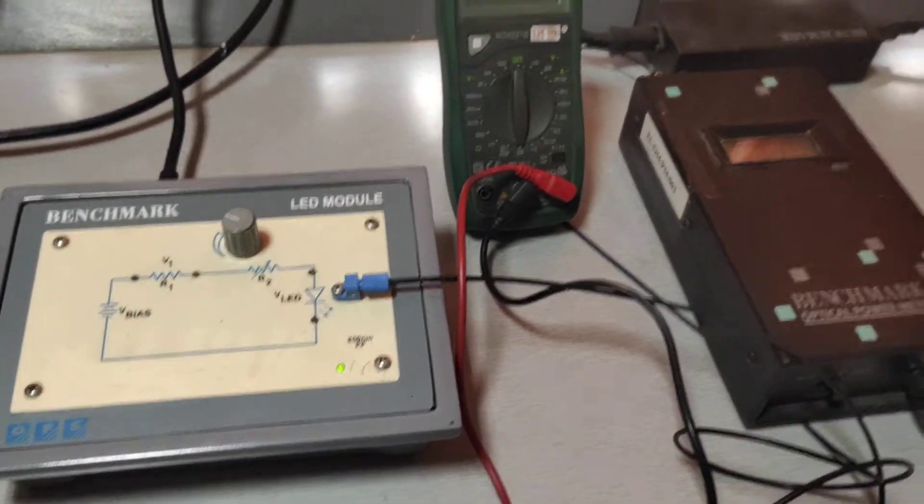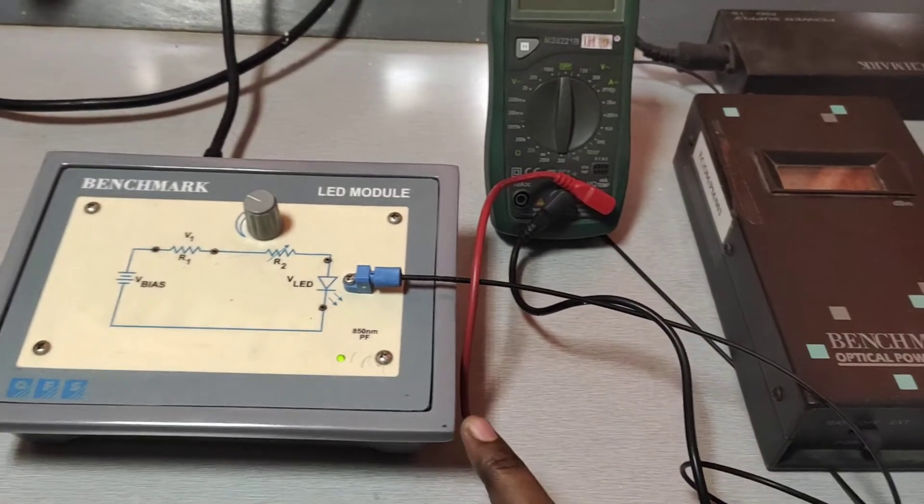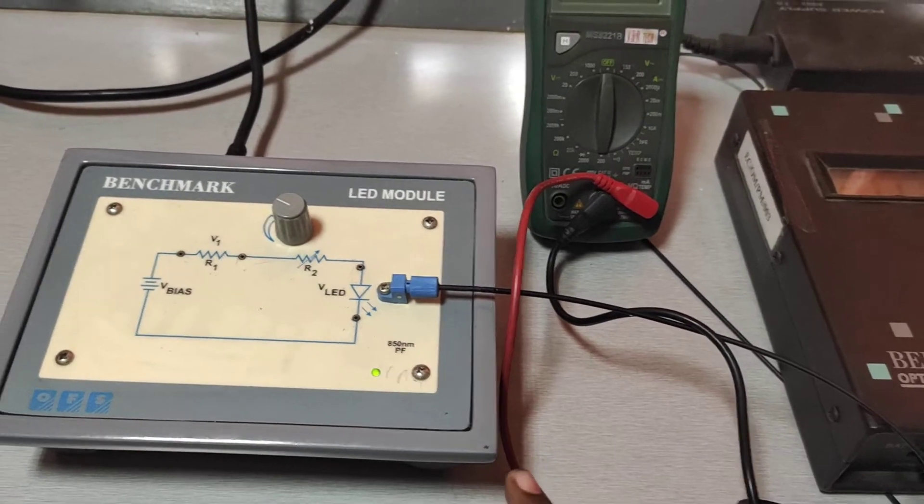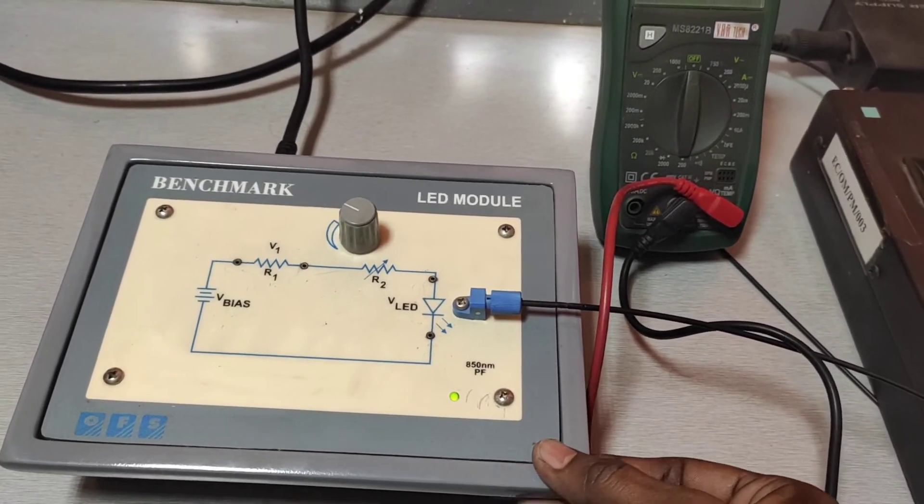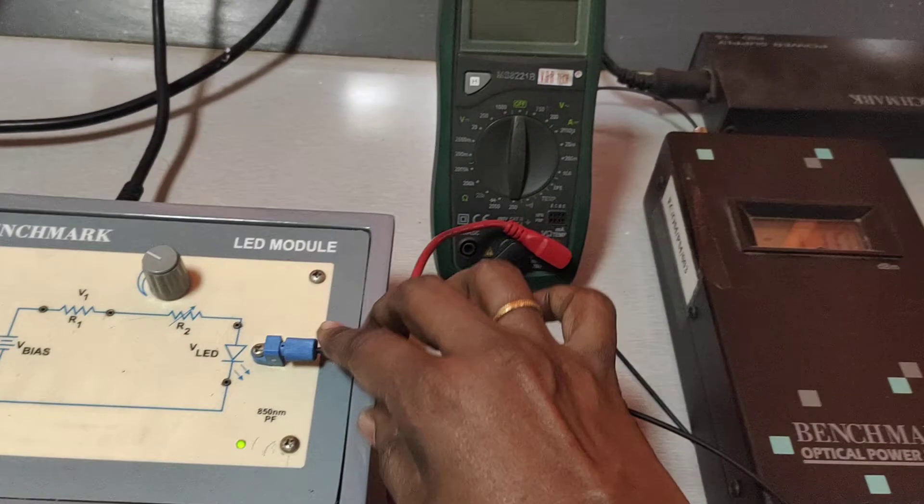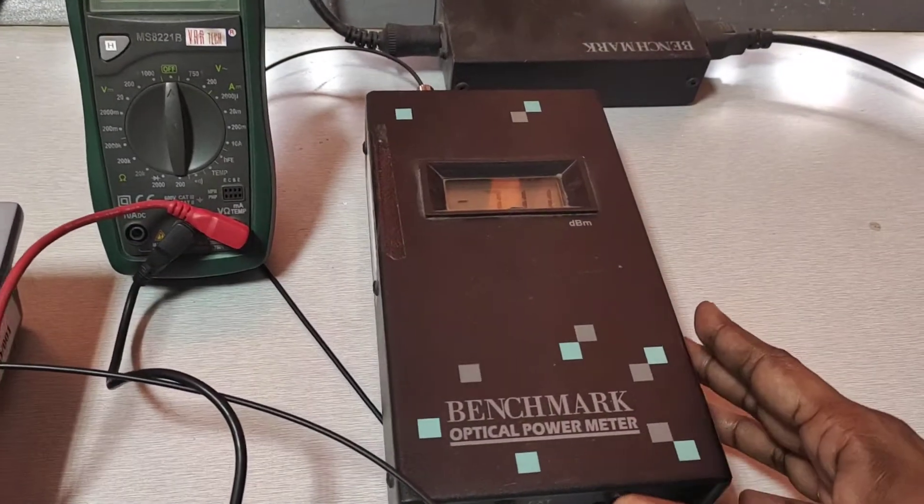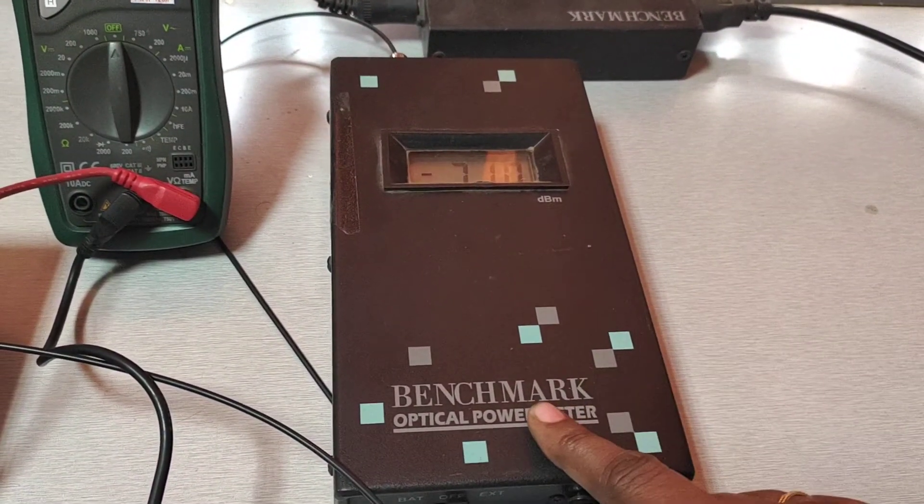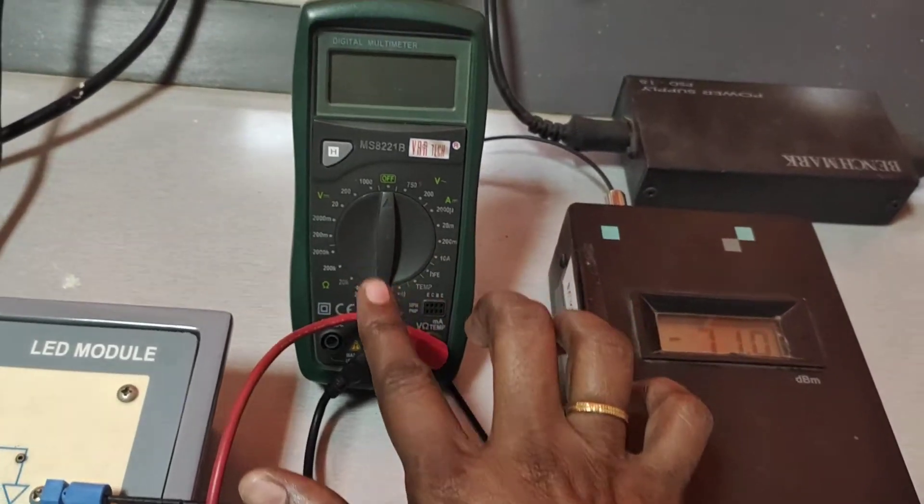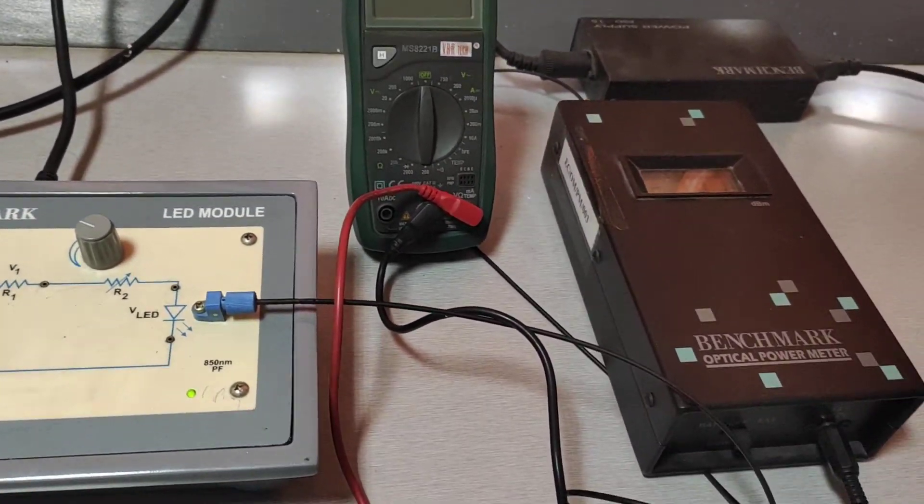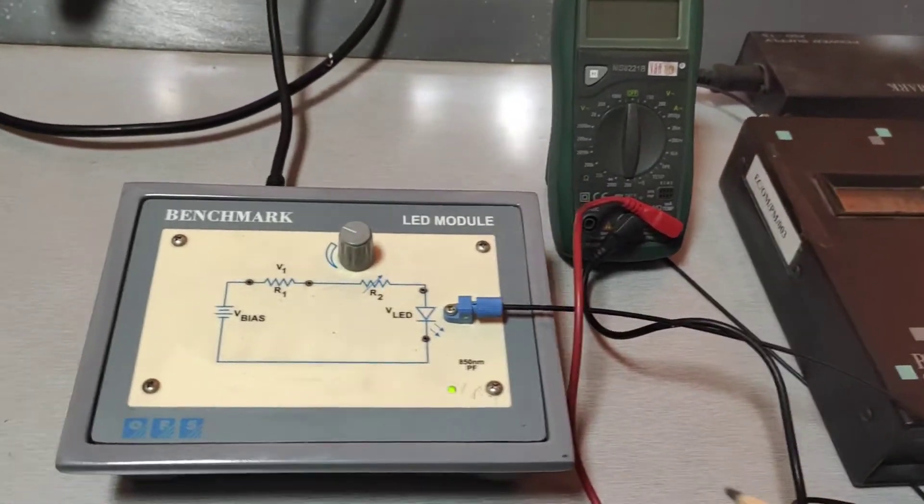Here I am considering the equipment for studying DC characteristics of LED. I consider an LED module, 1 meter optical fiber, optical power meter, and multimeter. These are the necessary equipment to do the experiment.